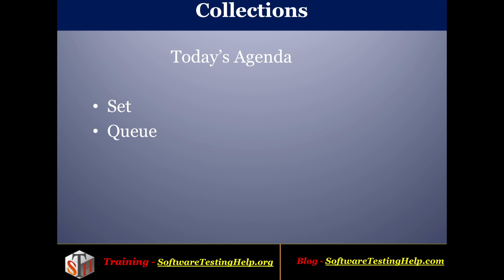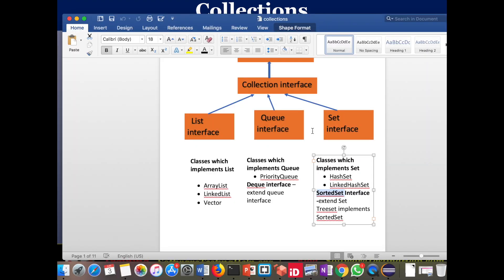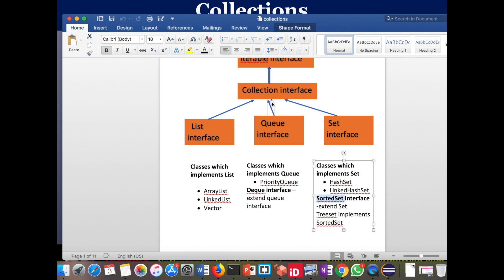Welcome to this tutorial on Set and Queue interfaces. Both the Queue interface and Set interface extend the Collection interface. In the Queue interface we have an implementation class called PriorityQueue and a Deque interface which extends Queue. For the Set interface we have two implementation classes, HashSet and LinkedHashSet, and a SortedSet interface which is extended by TreeSet.